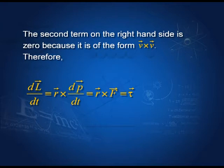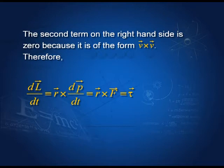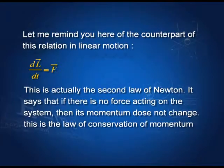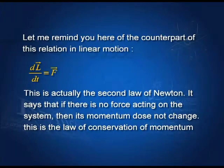So the rate of change of angular momentum is equal to the torque. If there is no torque, there is no rate of change of angular momentum — that means angular momentum stays constant. That is the law of conservation of angular momentum: if there is no torque acting on a rotating body, its angular momentum stays constant. The analog in linear motion is the law of conservation of momentum: if there is no force acting on the system, the momentum remains constant.